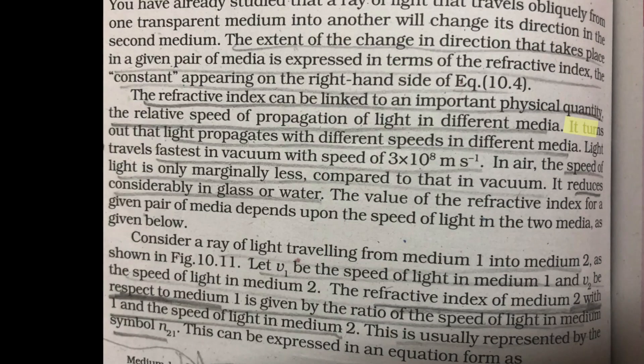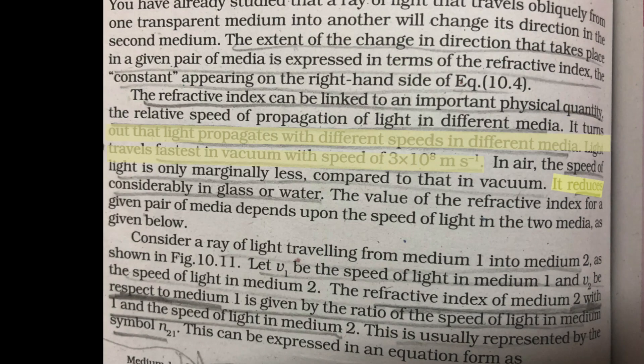The seeds of this video were sown when I was reading my grade 10 NCERT science book last year and found this. This claims that light slows down in glass. Whoa! How can light slow down when it is physically impossible for light to not go at the speed of light? There's a reason it's called a constant. Duh!